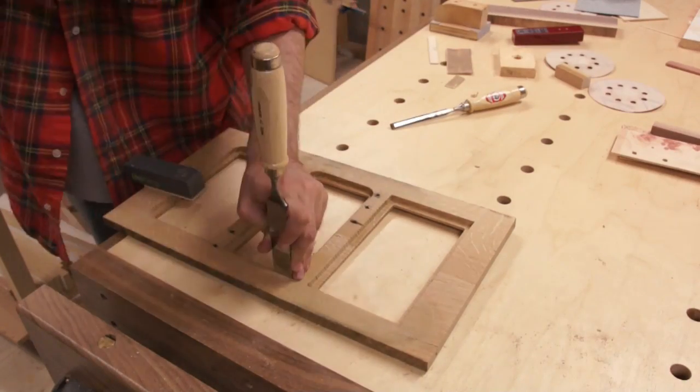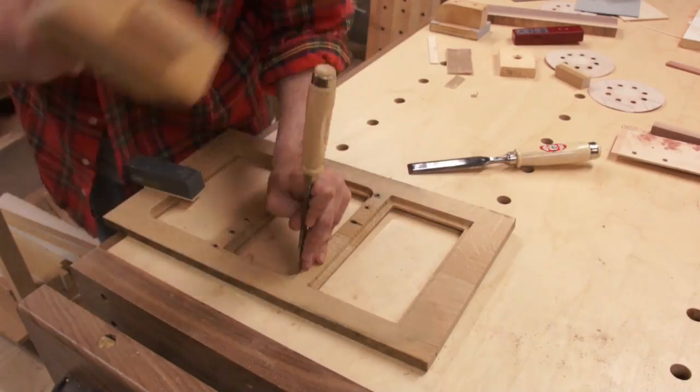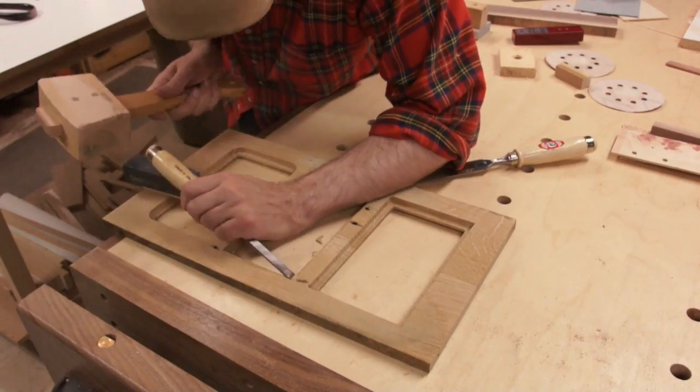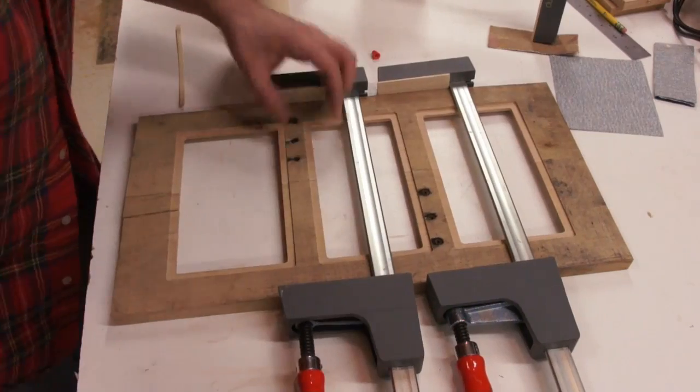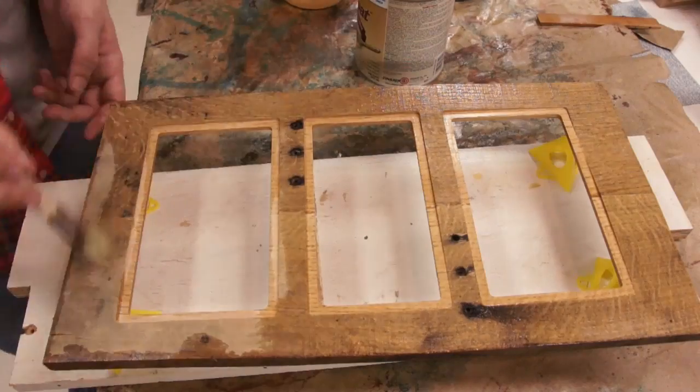Of course in the process of doing that all of the weak points in the pallet wood came apart. So I had to glue it back together again. Not a big deal. It's better to have it fall apart on the bench than on the wall.